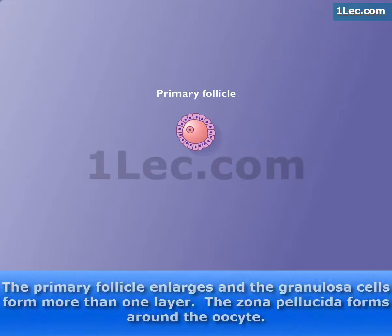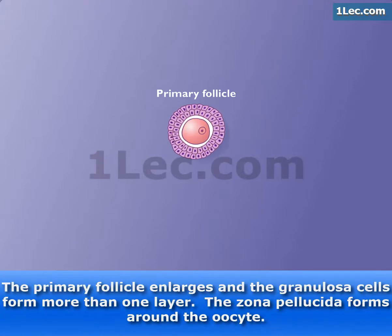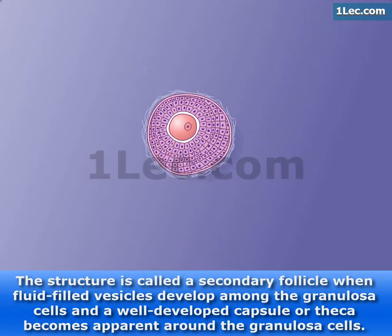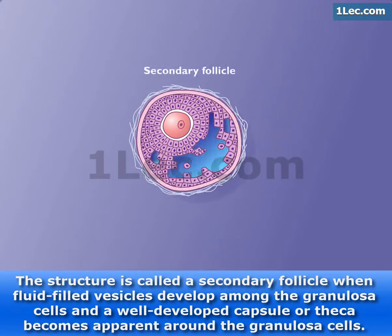The primary follicle enlarges and the granulosa cells form more than one layer. The zona pellucida forms around the oocyte. The structure is called a secondary follicle when fluid-filled vesicles develop among the granulosa cells and a well-developed capsule, or theca, becomes apparent around the granulosa cells.